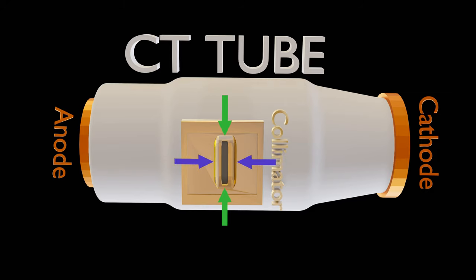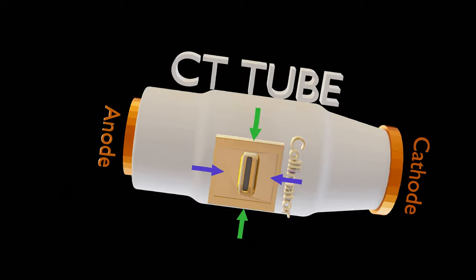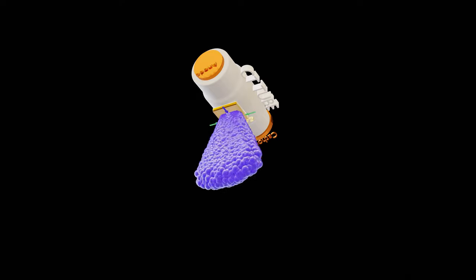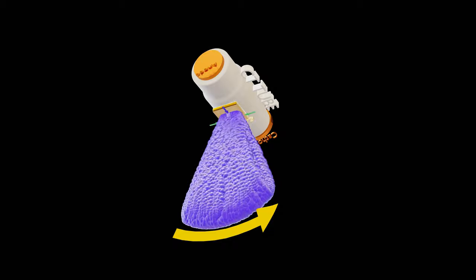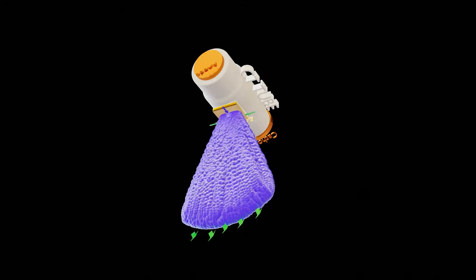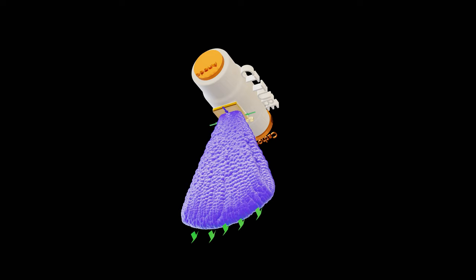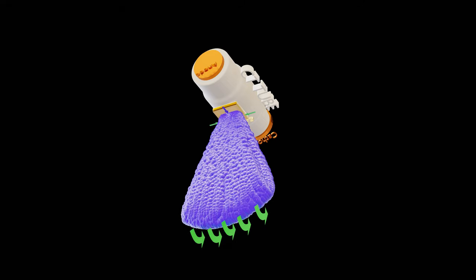This collimator has shorter opening along anode cathode direction and wider opening in perpendicular direction. The fan beam generated from this tube will not have heel effect along wide fan angle. It rather will be present in shorter beam direction or patient z-axis. This orientation eliminates heel effect induced spectral changes along the fan angle, which is important for better image quality.